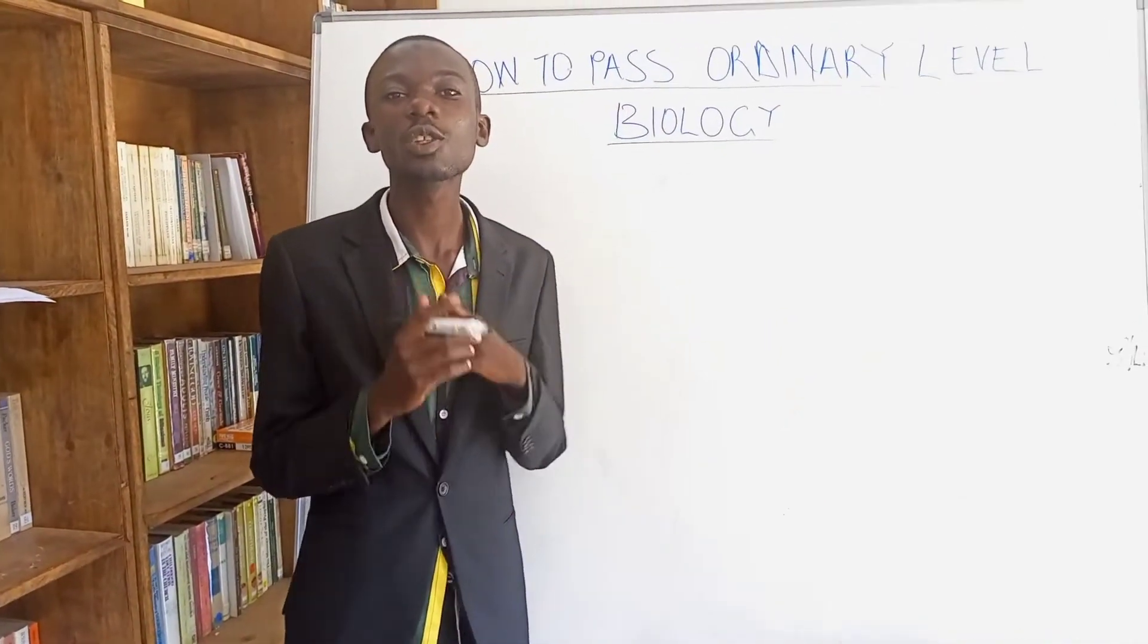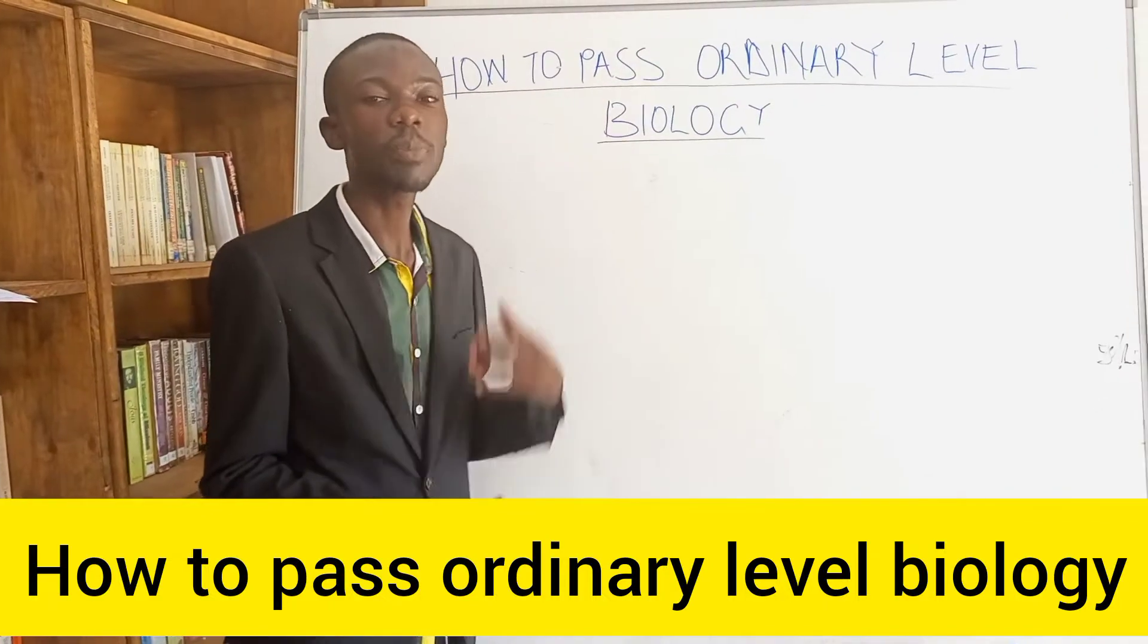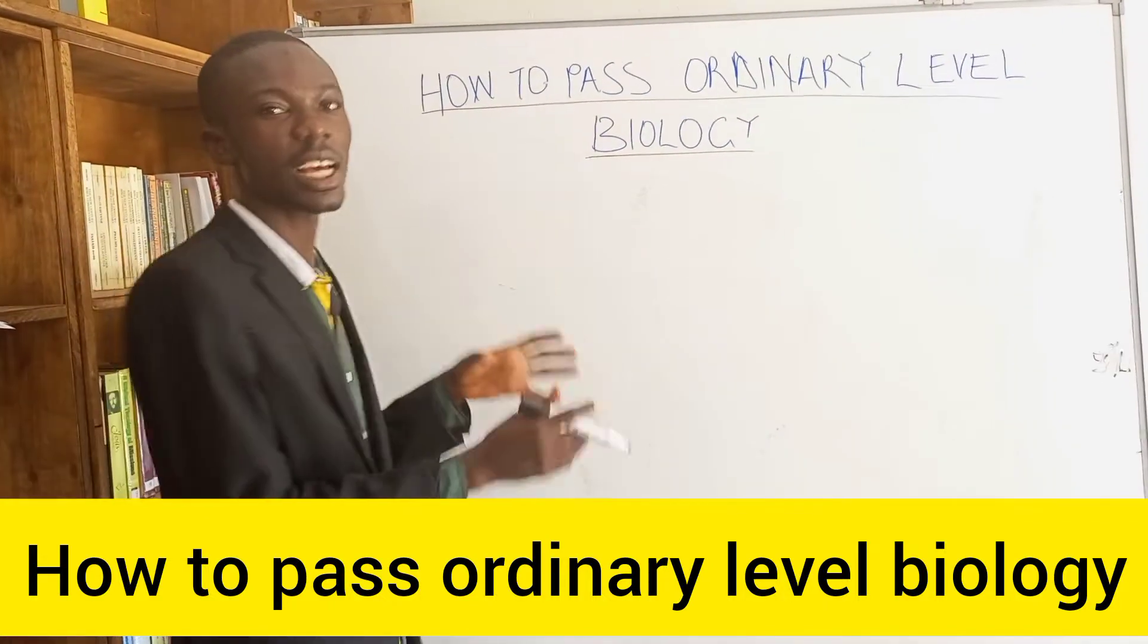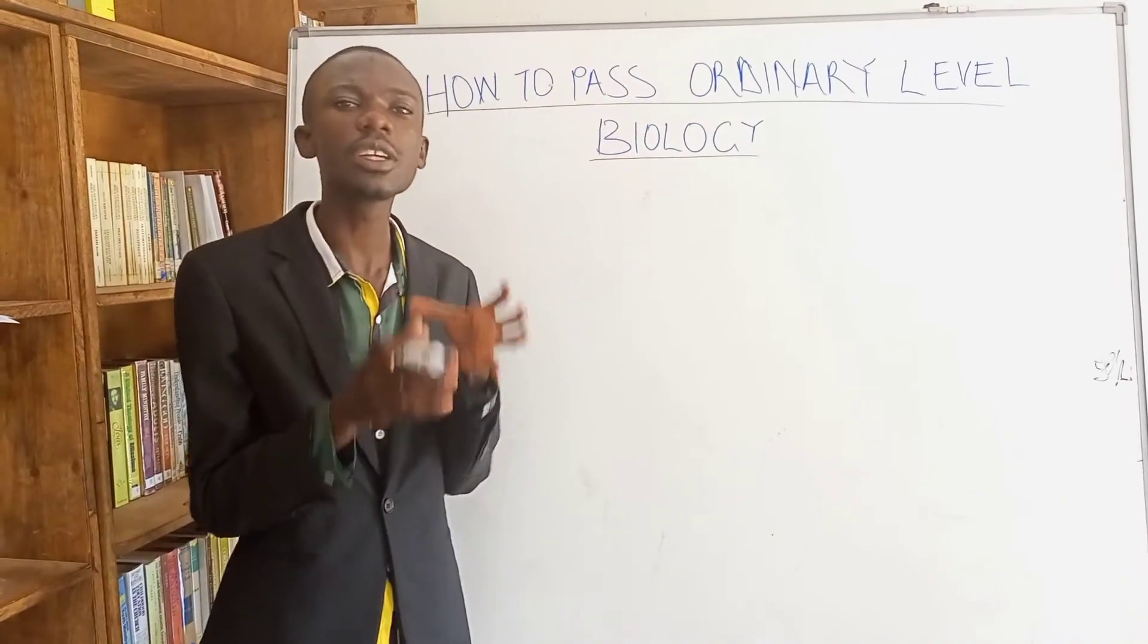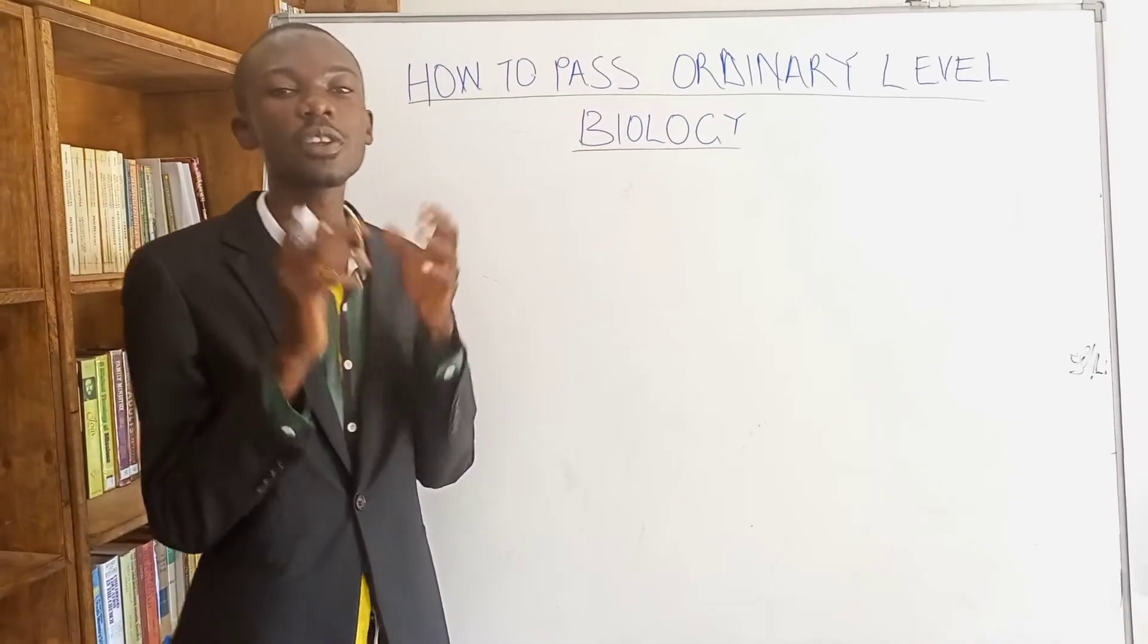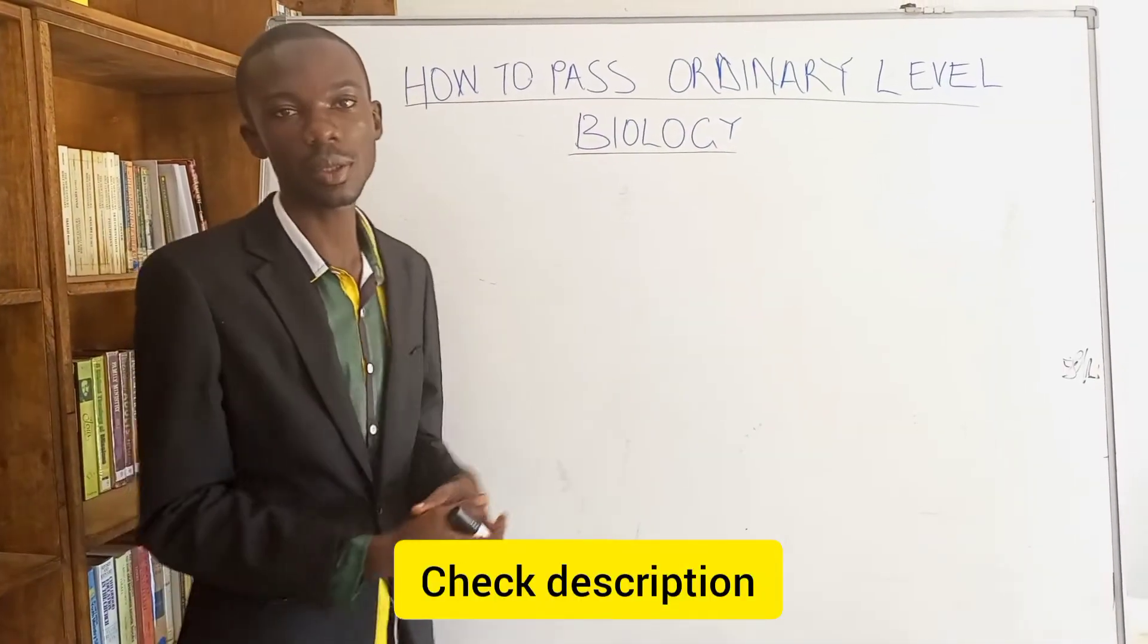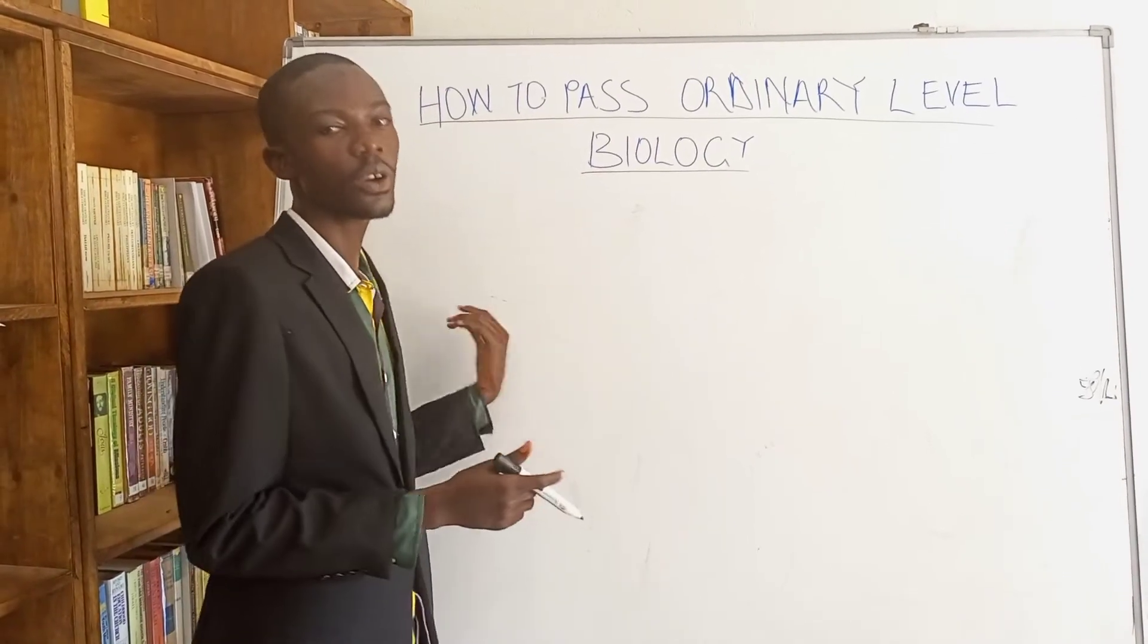We are continuing with our series of how to pass ordinary level biology and this is part 2. Part 1 we discussed about the topics that are brought in all level biology and part 2 we are going to break down the sections of these great papers, both practical and theory papers. So if you did not watch the first part, check in the description below there is a video of the different topics that are set in all level biology.